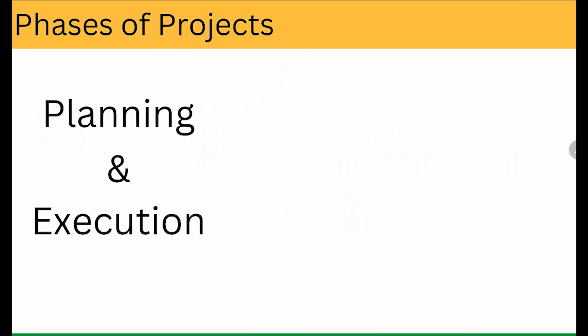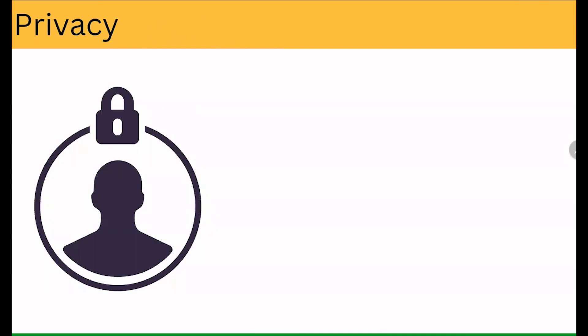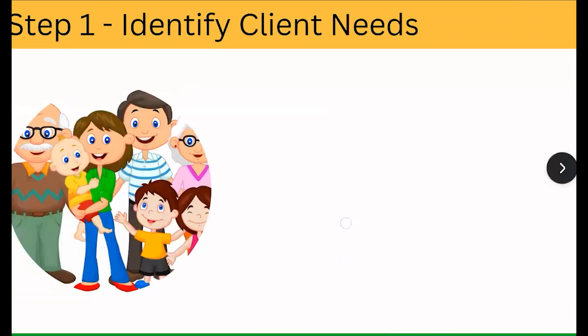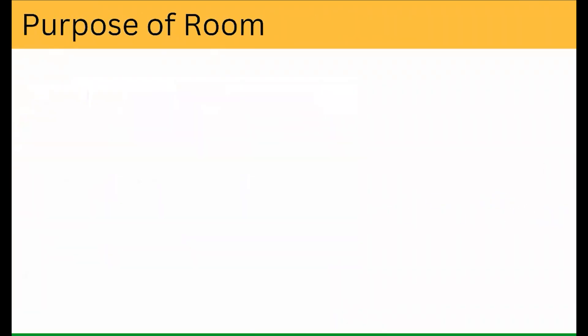तो चलिए दोस्तों आगे बढ़ते हैं. आज यहाँ पे मैं बाकी जो पूरे course का एक overview दे देता हूँ, तो जब हम next master class में मिलेंगे, तब आपको बताऊंगा कि यह क्या-क्या है. देखिए, जो space planning में सबसे पहले concept होता है — privacy. तो अगर मैं आपको कहूँ कि 1000 square feet का place design करने के लिए दिया है, तो आज चालू कहाँ से करूँ? तो मैं इस seven steps में आपको — we'll begin with flow of traffic — फिर उसके बाद हम हर एक period में सारे master classes देने वाला हूँ.